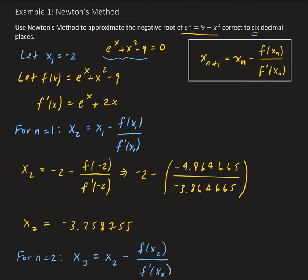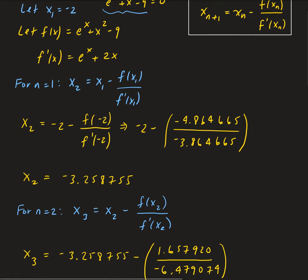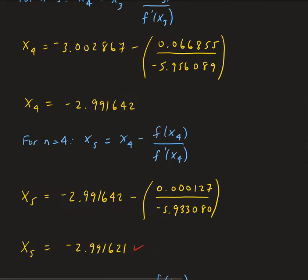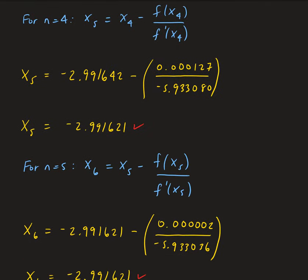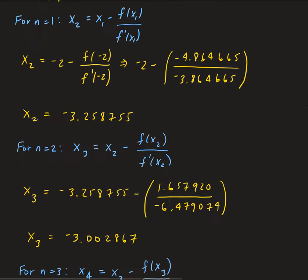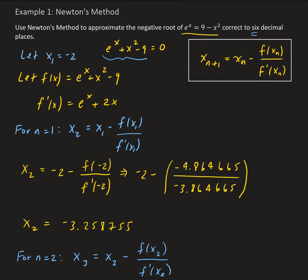We started with the initial guess of negative 2. Depending on your initial guess, there may be more steps or fewer steps. We go through and just keep iterating using Newton's method. Remember that we have to round — in this case, to six decimal places — and when you get something repeating to six decimal places, that's when you can stop. So this is the solution for our function: that's where e to the x and 9 minus x squared intersect each other, in terms of the negative root.